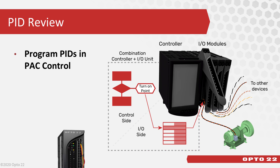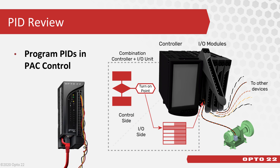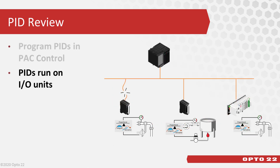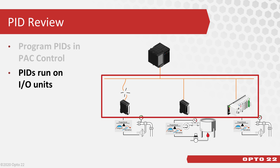If your strategy uses a remote IO unit, such as a Groove Rio, then commands for points on that unit are executed by its own processor. The PIDs configured in PAC Control actually run on the IO unit side, independently of the controller.